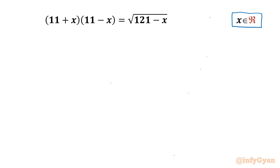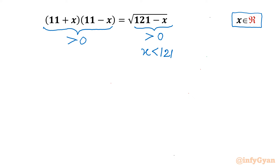Let's get started by writing the domain of the equation first. The right-hand side involves a square root, so the expression inside must always be non-negative — this gives x less than 121. On the left-hand side, the square root result must also be positive, so using a number line you find x must lie between −11 and 11. Taking the intersection of both conditions, the domain is x ∈ (−11, 11).